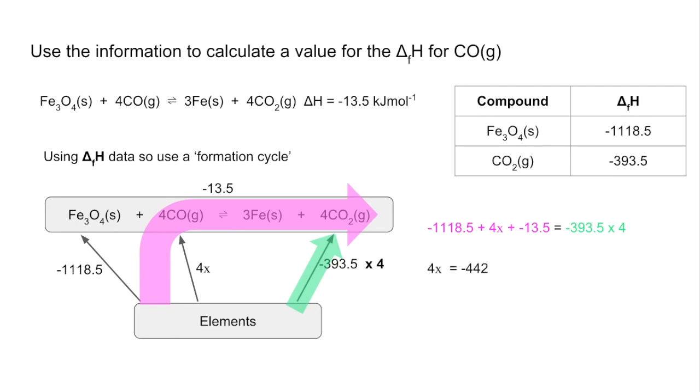4x comes out of being equal to minus 442. So therefore x is minus 110.5 kilojoules per mole.